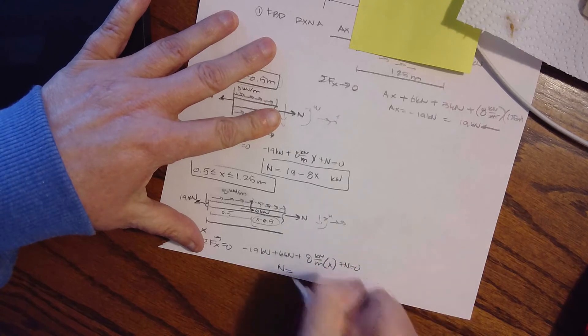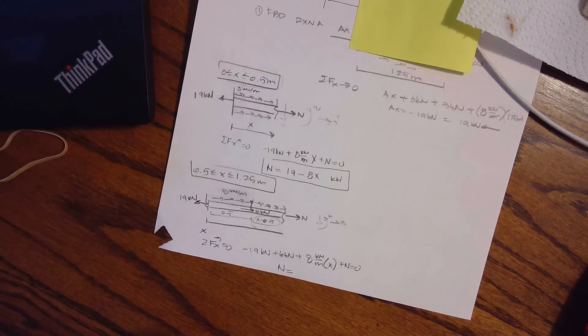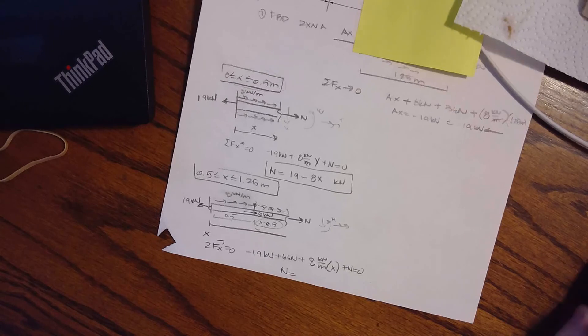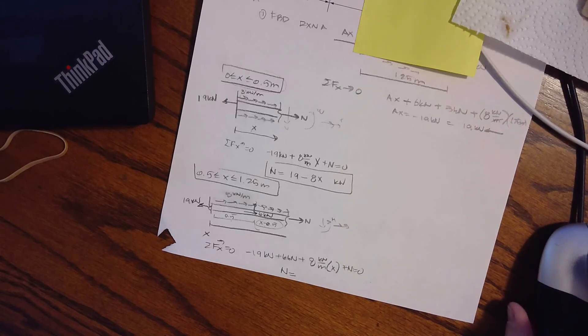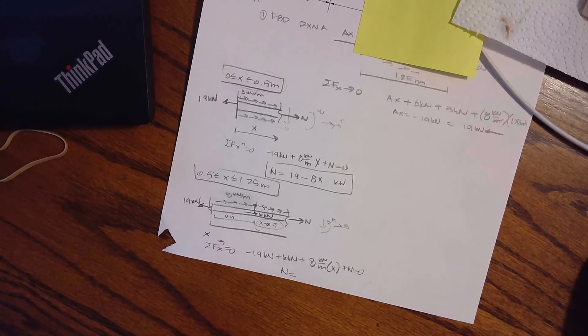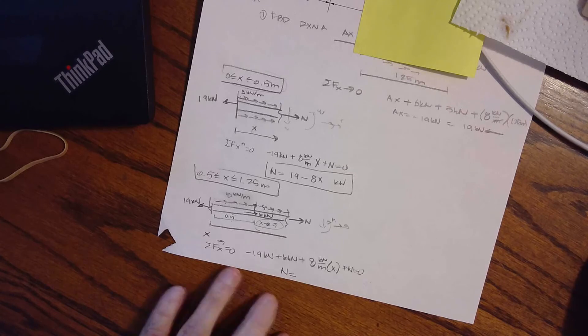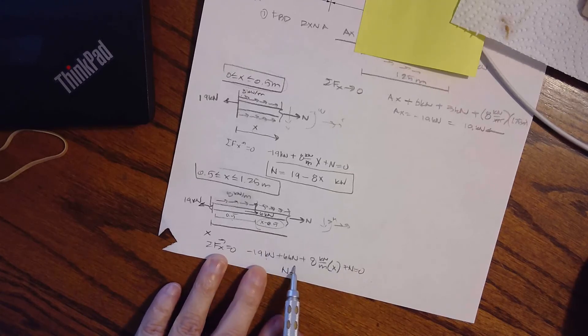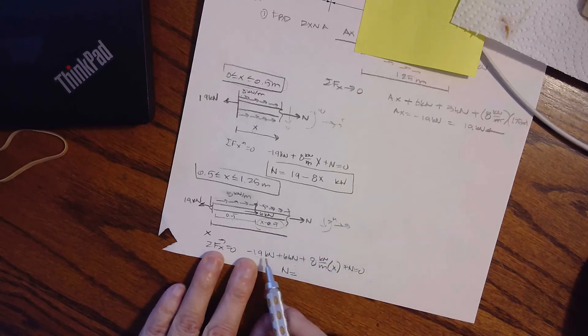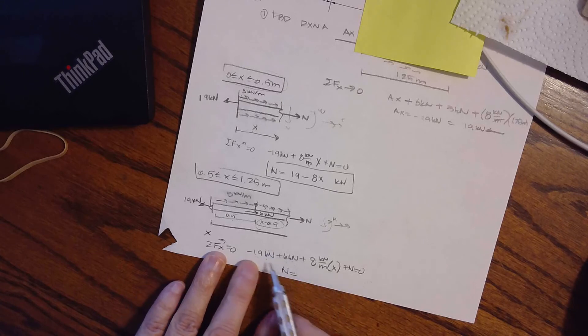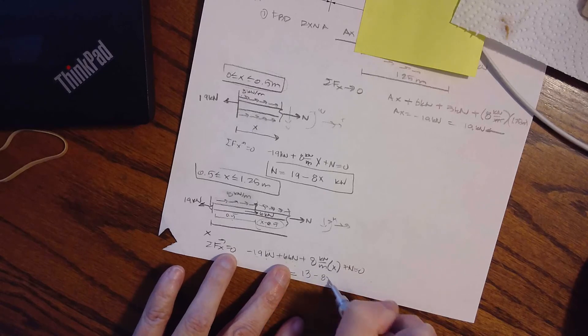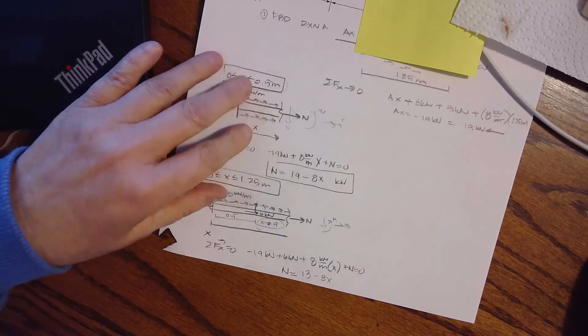So my normal force, if I were to write this all out, would end up being, I don't have a working calculator, so I've worked it out already. And it looks like it would be, I didn't actually write it out, but it'll be 19 minus 6. So what is 19 minus 6 would be 13. So I'd have 13 minus 8X for my equation.